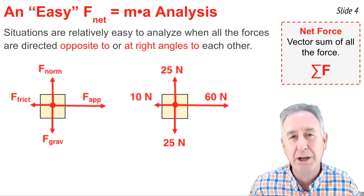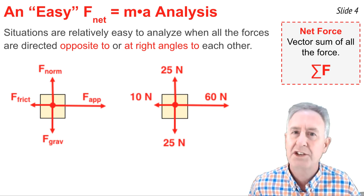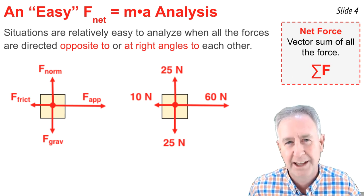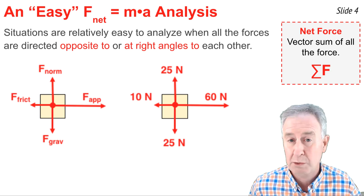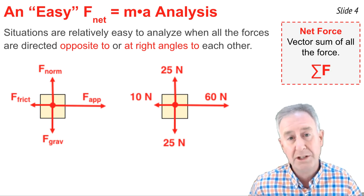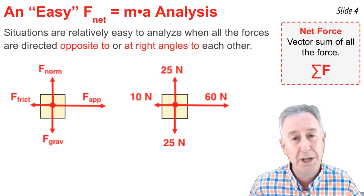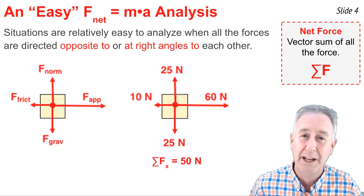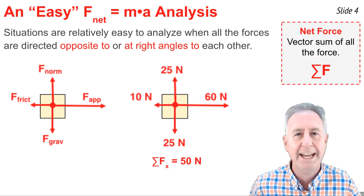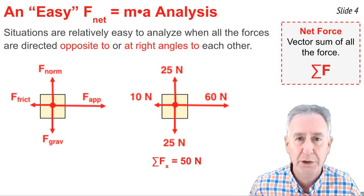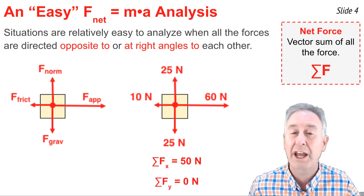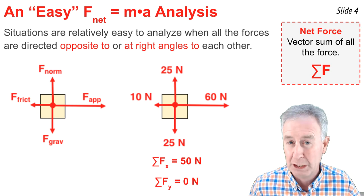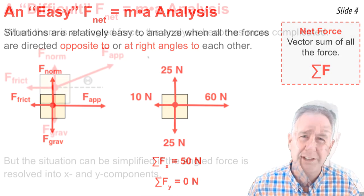That is, we have to find what the vector sum of all the forces is—Sigma F, as some people say. If I look at the horizontal direction, the sum of all the horizontal forces is real easy to compute. It's 60 to the right plus 10 to the left, which adds up to 50 newtons to the right. It's as easy as calling one negative and the other positive. In the vertical direction, the sum of all the forces is 0 newtons. When forces are at right angles and opposite to each other, it's real easy to calculate the net force.